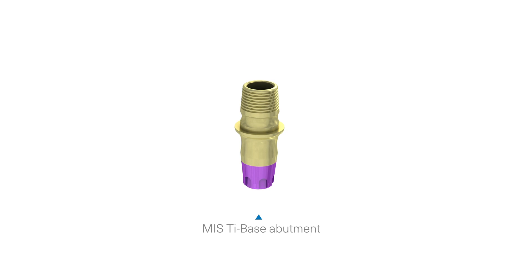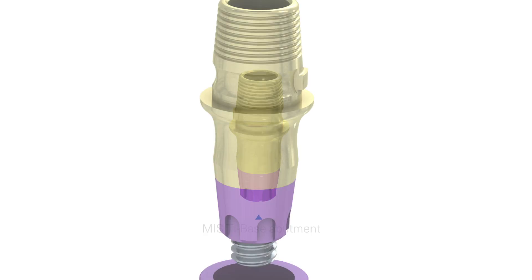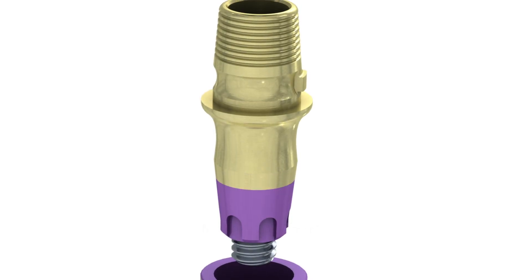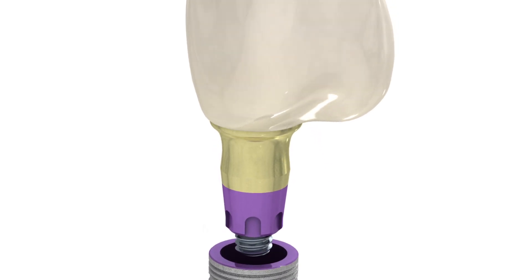In this video, we'll show you how to use MIS tie base in a single-tooth, screw-retained restoration. For this procedure, we use a conical connection implant.